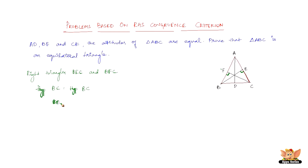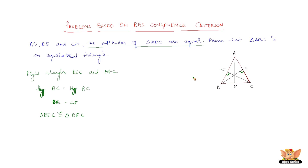We have BE equal to CF because they are the altitudes of triangle ABC, and we are told that the altitudes are equal. Also, angle F equals angle E, which is understood — both are right angles. This is the key point of the RHS criterion.